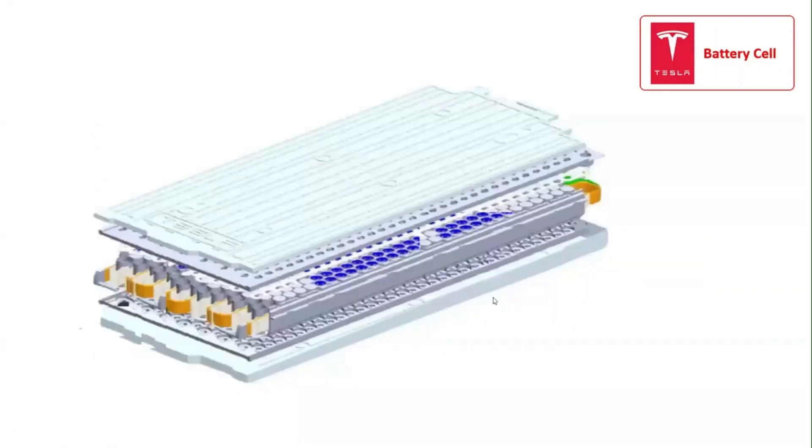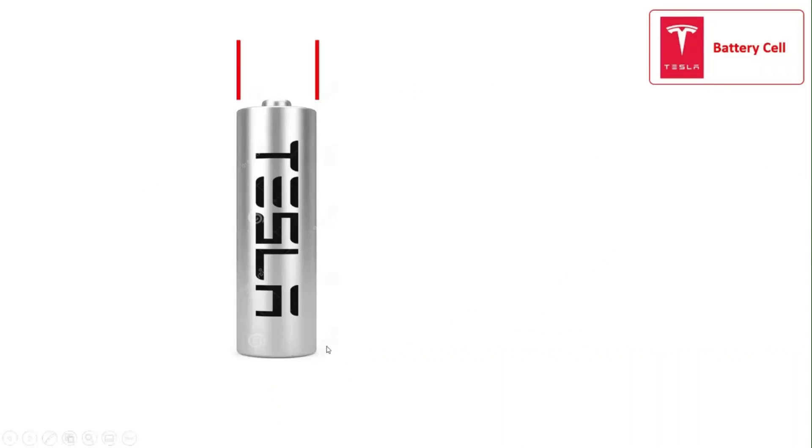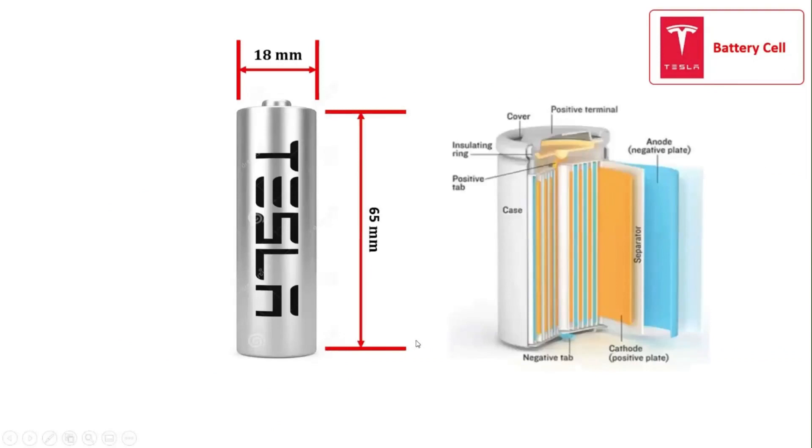The Tesla Model S consists of a battery pack with 18650 lithium-ion battery cells. The cells are cylindrical in shape and have a dimension of 18 mm in diameter with 65 mm in height. The nomenclature of the cell can be easily understood by splitting the numbers into three parts.